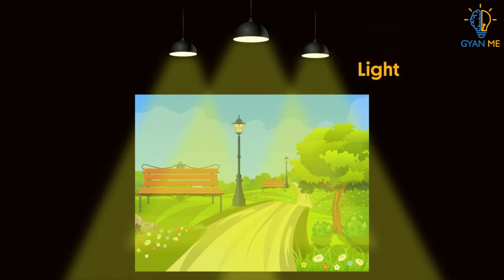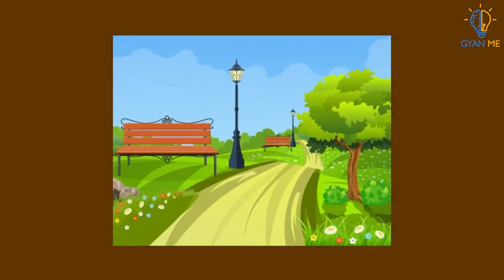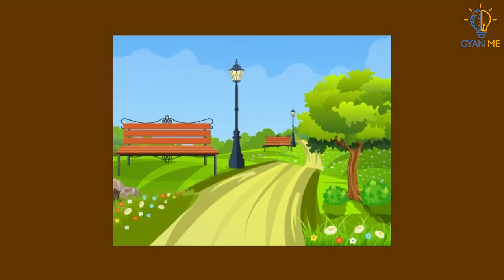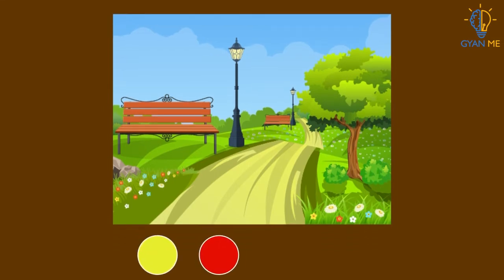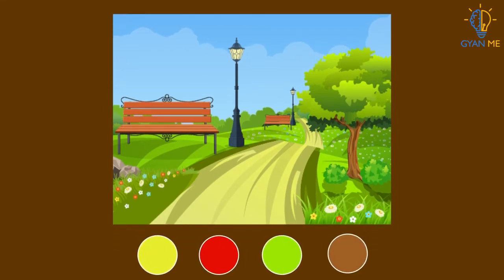How important light is for us to see anything around us! How many colors do you see in this picture? Yellow, red, green, brown, and maybe many others.